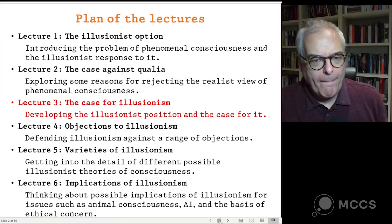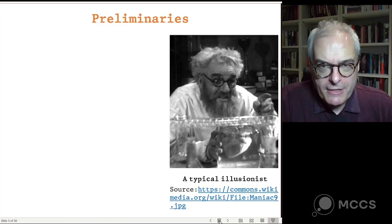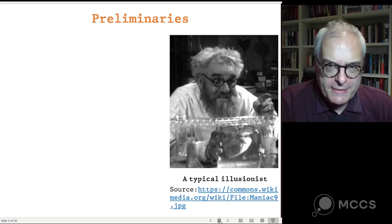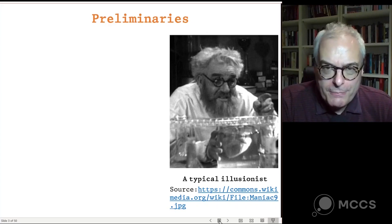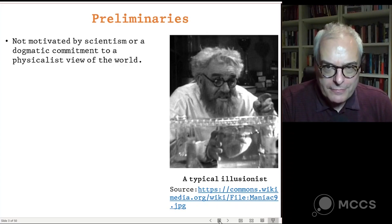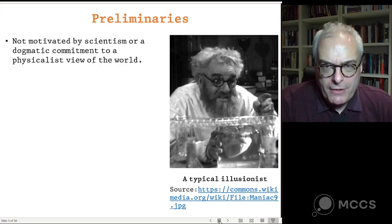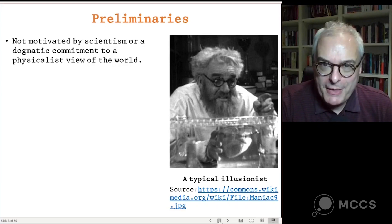Let me begin with a few preliminaries. Here is a photograph of a typical illusionist. Illusionists, you see, are maniac scientists — or at least that's how many people imagine illusionists. They think that illusionists are motivated by a crude scientific view of the world: if science can't explain it, then we should just deny its existence. Or they think that illusionists are dogmatically committed to a physicalist view of the world, and that anything that doesn't fit into that picture has to be denied.